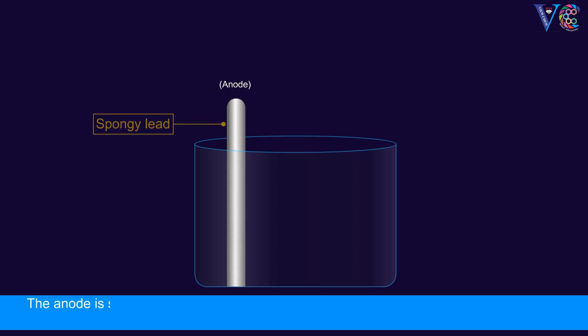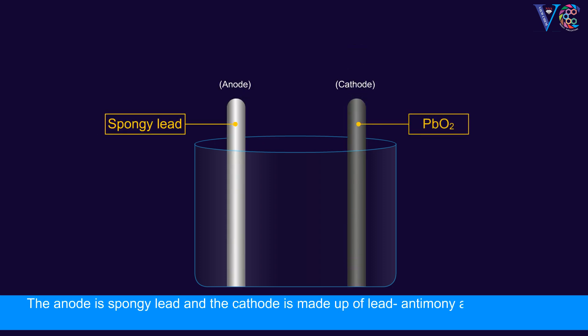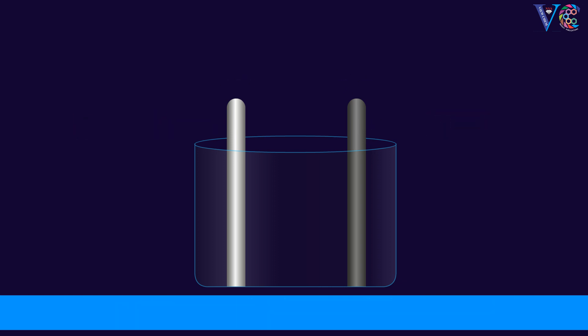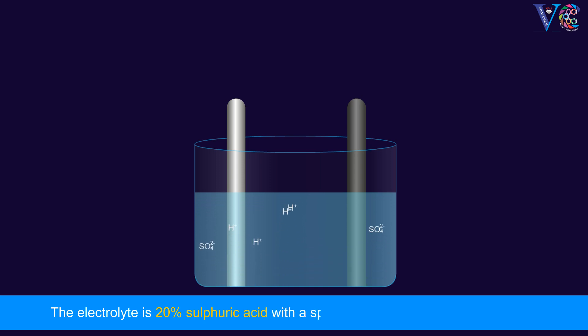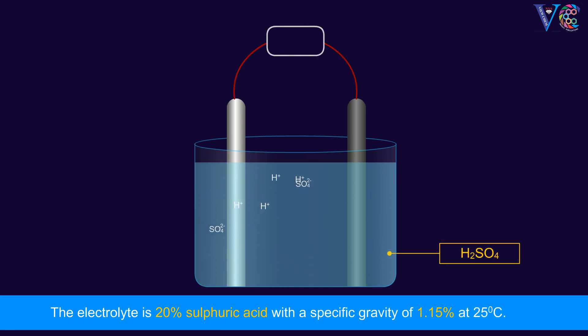The anode is spongy lead, and the cathode is made up of lead antimony alloy coated with lead peroxide. The electrolyte is 20% sulfuric acid with a specific gravity of 1.15 at 25 degrees centigrade.